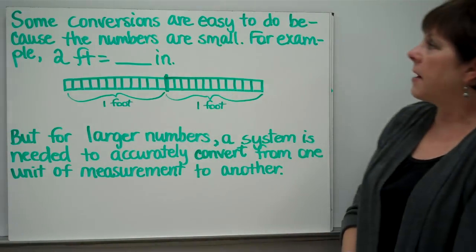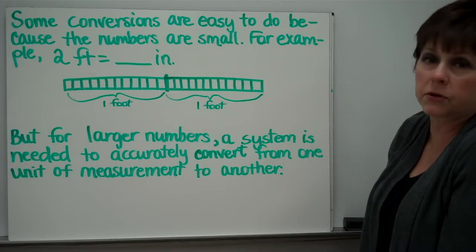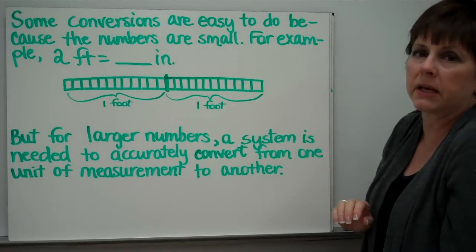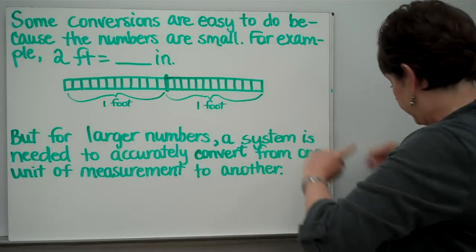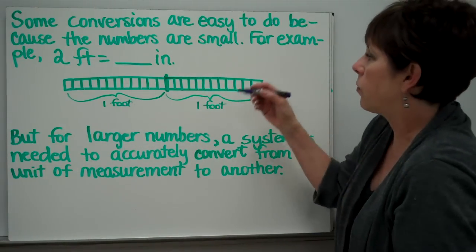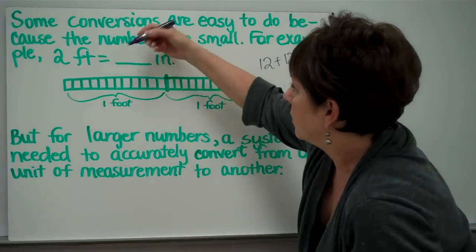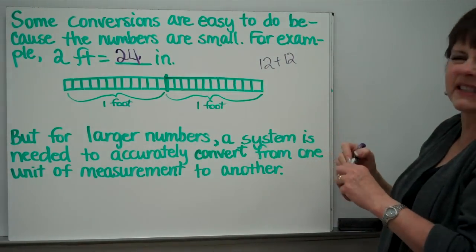Now, some conversions are really easy to do because the numbers are small. For example, let's say 2 feet equals how many inches? Well, we know 1 foot is 12 inches, so you would add 12 plus 12, and that would give you 24 inches. That's easy.